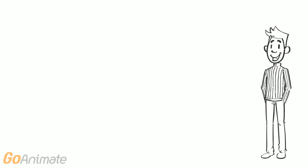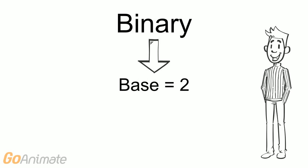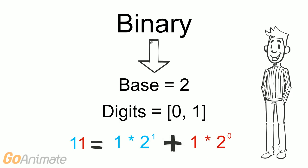We learn computers store information as binary digits, which means they use the binary number system. The binary number system is based on the number 2. So binary digits can have a value of 0 or 1. And a binary number, like 11, represents 1 × 2^1 plus 1 × 2^0.